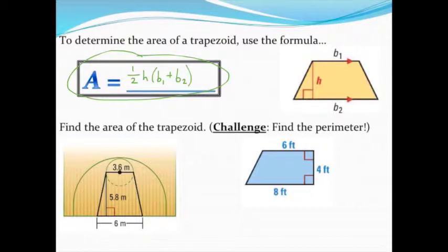Let's find the area of these two trapezoids, then we'll attempt the challenge on the second figure and find its perimeter. Starting with area, it's a matter of plugging in numbers. One-half times the height—remember, it needs to be perpendicular to your bases—so the height of this trapezoid is 5.8.